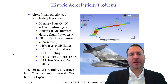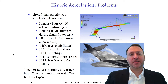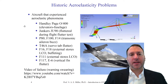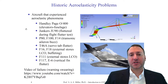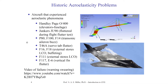Let's look at some historic aeroelasticity problems through vehicle failures. Particular aircraft have experienced tremendous aeroelastic phenomena or failures. The Handley Page O/400 showed an elevator-fuselage aeroelastic failure. The Junkers JU90 fluttered during a flight flutter test, which is very bad. The P-80, F-100, and F-14 Tomcat suffered transonic aileron buzz. A T-46A suffered a servo tab flutter. The F-16 and F-18 suffered external stores LCO and buffeting. And the F-111 and F-117 had tremendous flutter.